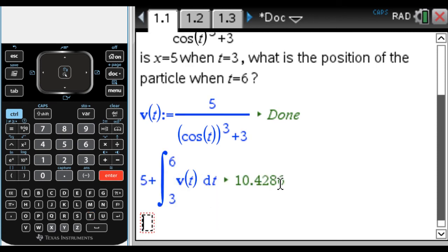It's going to give me a decimal because it can't find an exact value - it can't find an antiderivative. So my position at t = 6 is 10.4286, which is where I was at t = 3 plus the displacement from three to six of v(t)dt. That's how we can do the problem.